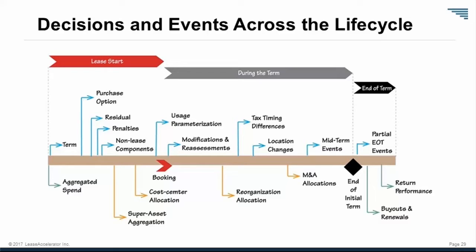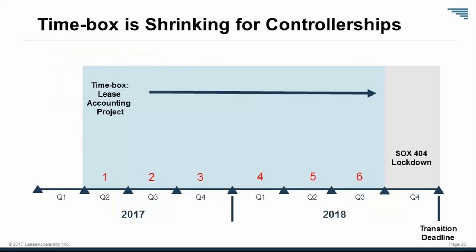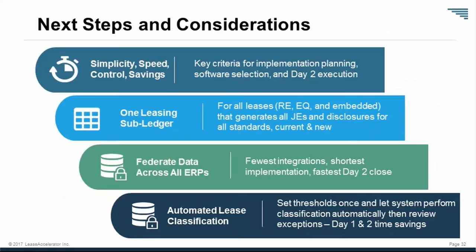A quick summary: the key criteria for implementation planning, software selection, and day-two execution are simplicity, speed, control, and savings. Having one lease accounting sub-ledger that takes all information for all leases reduces the number of integrations needed, and you should be able to use that one data set to report under both current and new standards. Make sure it's easy to federate across all ERPs — fewest integrations, shortest implementation time.